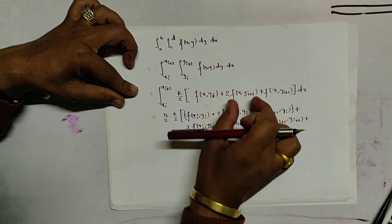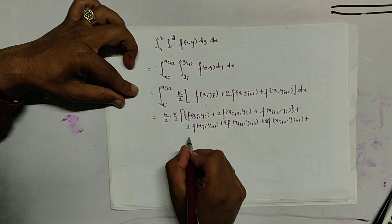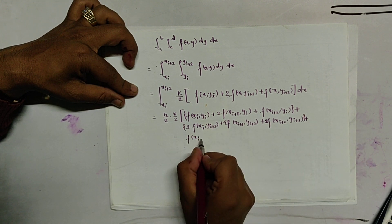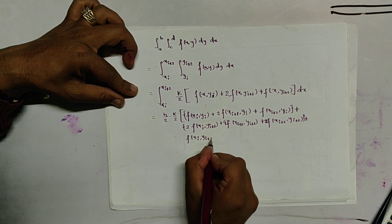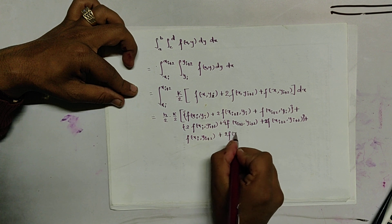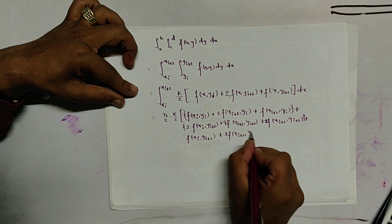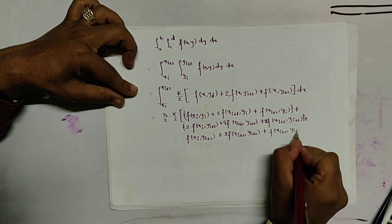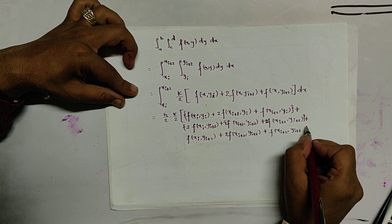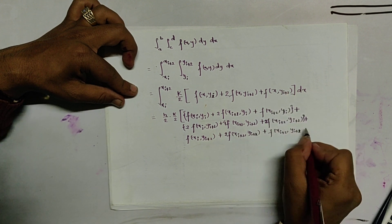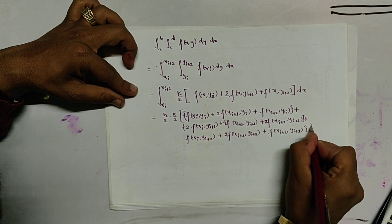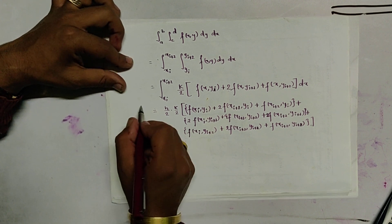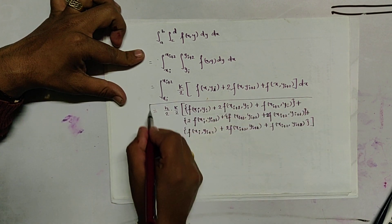Applying the trapezoidal rule for the last row gives f(x_i, y_{i+2}) + 2f(x_{i+1}, y_{i+2}). The last term correction: it is 2, not 1. This completes the double integration form of the trapezoidal rule.